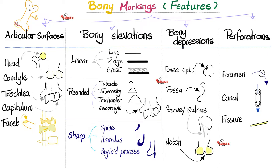Next, bony depressions. A tiny depression is called a pit or a fovea. A larger depression is called a fossa — does anyone remember the fossa ovalis of the heart? A linear depression is called a groove or a sulcus, such as the bicipital groove, which we find on the humerus — because the biceps attaches there, it's the bicipital groove for the biceps. And then there's a notch.